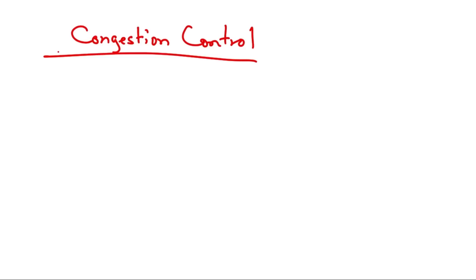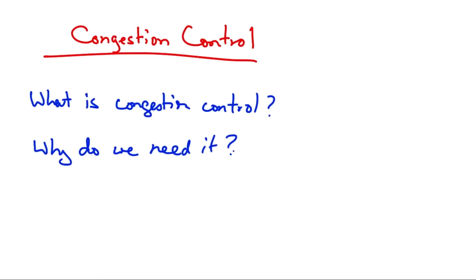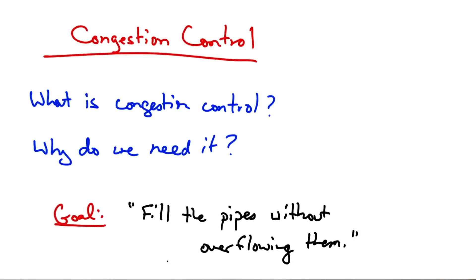We're starting course two on congestion control and streaming, and we'll first talk about congestion control. In particular, what is congestion control, and why do we need it? Simply put, the goal of congestion control is to fill the internet's pipes without overflowing them.